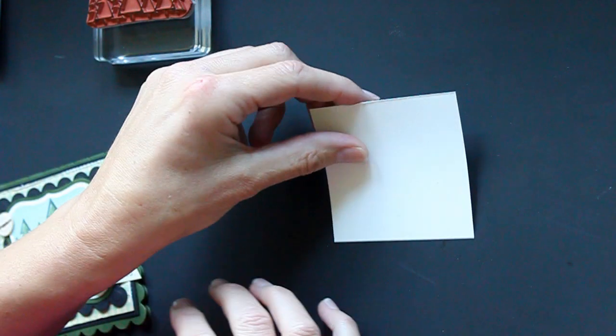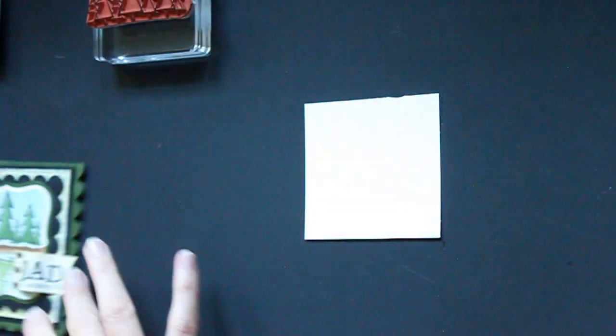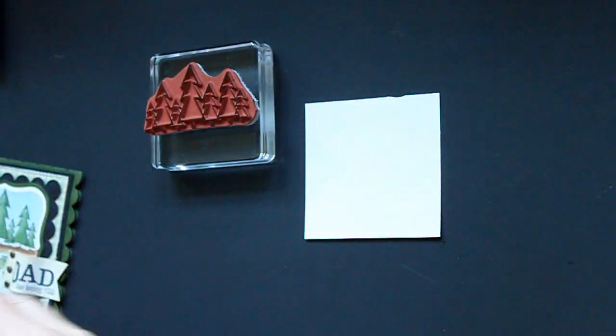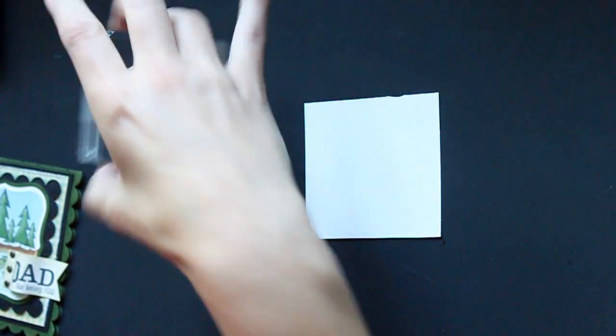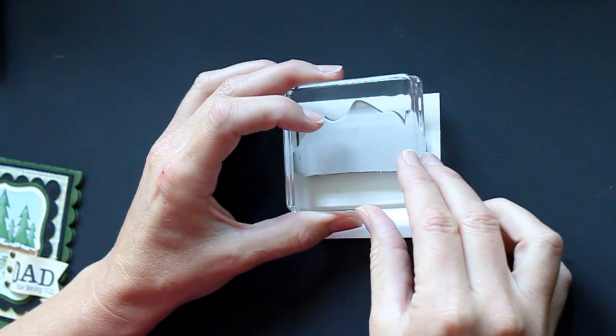So what you do first is stamp your image. My images for this card are from Unity. Stamp your main image directly onto your cardstock.